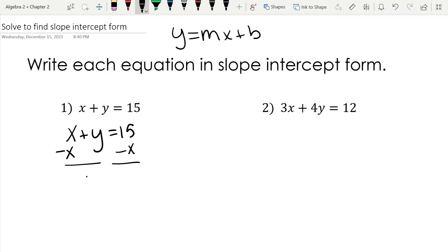This gives me y equals... Now, at this point, I want it to look like my slope-intercept form. So I want to put negative x plus 15. Because you'll notice, when I write y equals mx plus b, I can definitely see that my slope is negative 1 and my y-intercept is 15. So this is the answer for the first one.